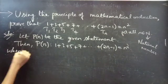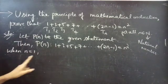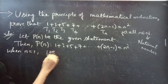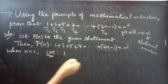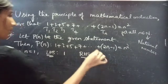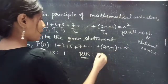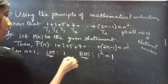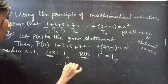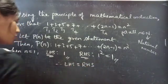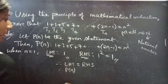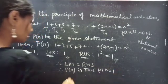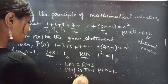When n equals to 1, as I said earlier, you will take only the first term from LHS. So LHS equals 1. Coming to RHS, put n equals to 1 in RHS: 1 squared equals to 1. So here LHS equals to RHS. Therefore, P of n is true for n equals to 1, that is P of 1 is true.